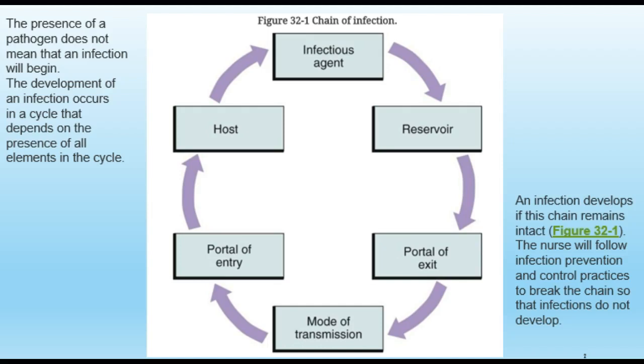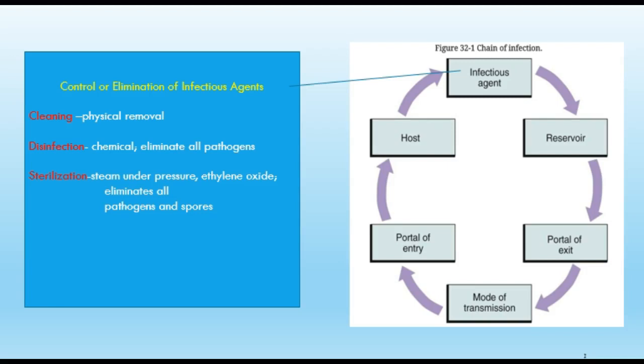When we think about the infectious agent — that's the microorganism — the way we can break the chain at this point is by controlling or eliminating that agent. We do that by physically removing objects that may have an infectious agent on them; we call that cleaning. We also do disinfection, which is chemically eliminating all pathogens. There's also sterilization, which uses steam under pressure to eliminate all pathogens, including spores. Cleaning, disinfecting, or sterilizing equipment between patients helps break the chain.